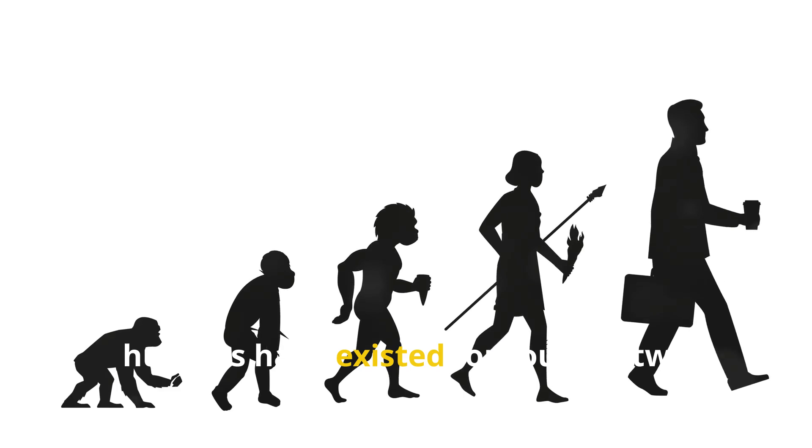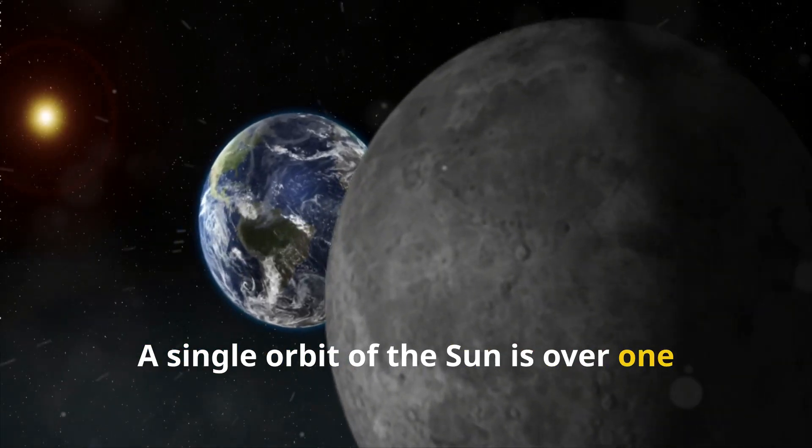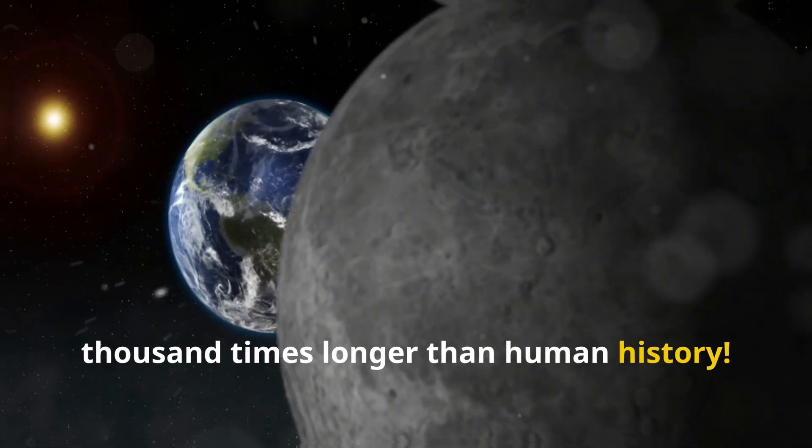Think about it. Humans have existed for roughly 200,000 years. A single orbit of the sun is over 1,000 times longer than human history.